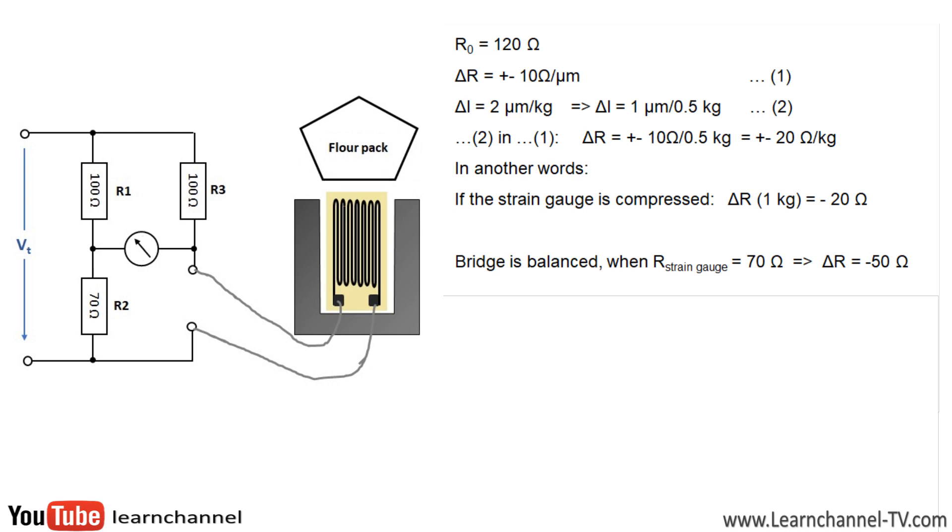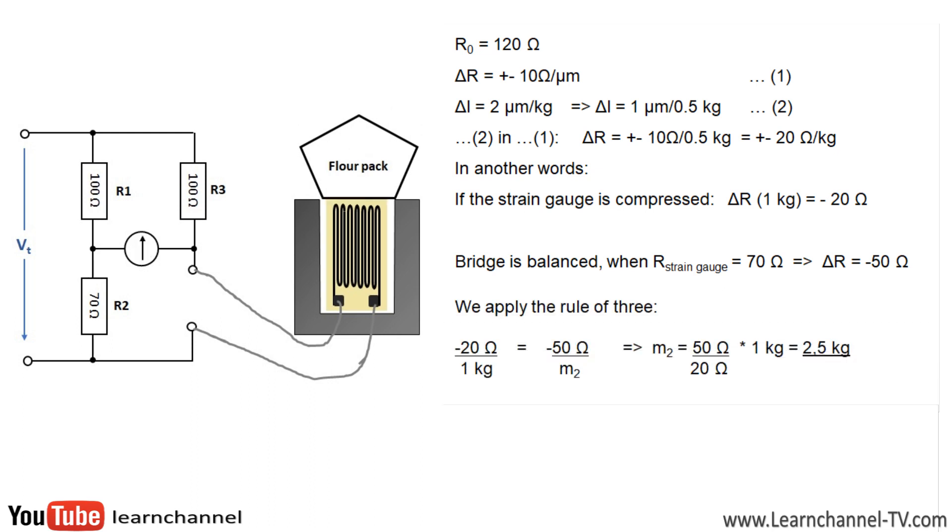First, we want to calculate the changes in resistance value measured in ohms on the installed strain gauge at the mass of 1 kilogram. Now, the solution as shown is simple and can be calculated using the rule of three. Note that the resistance value of the strain gauge decreases when it is compressed, which is the case here.